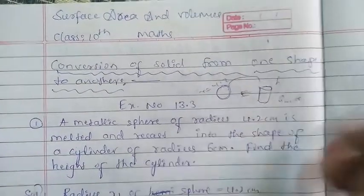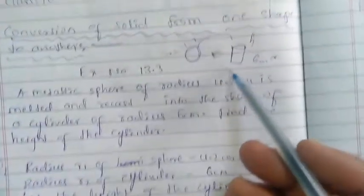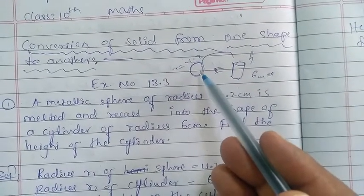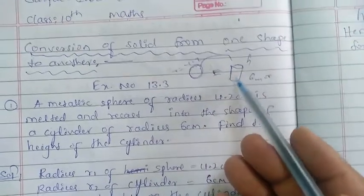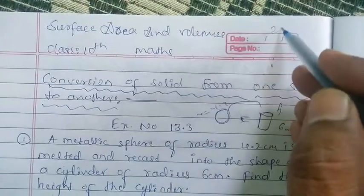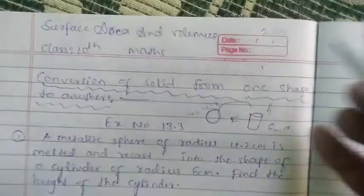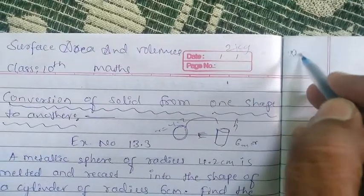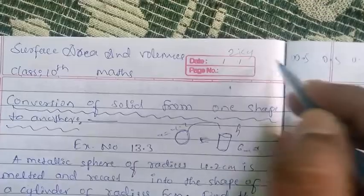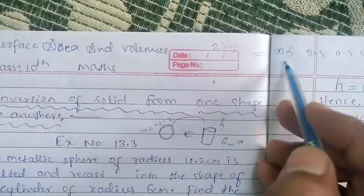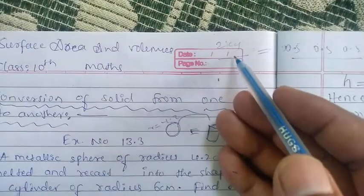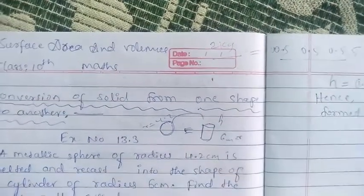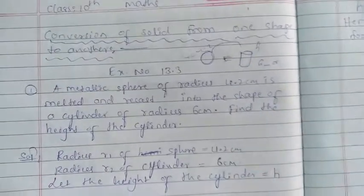Now what is the volume of both figures? Both are the same, because the sphere is melted and recast into the cylinder — so both volumes are equal. For example, consider 2 kg of flour: if you divide it into four equal parts of 0.5 kg each, the mass of each part is the same. Similarly here, volume of the sphere equals volume of the cylinder.